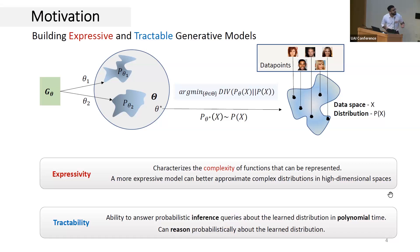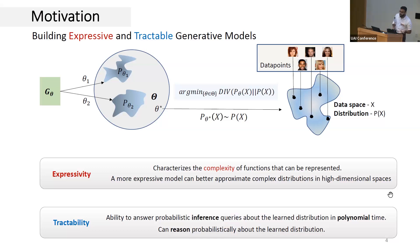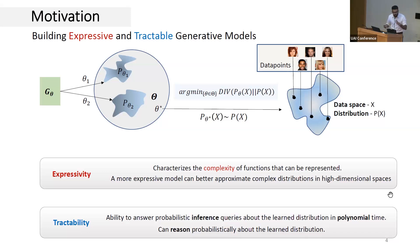Second, we need models to be capable of reasoning probabilistically about the learned data distribution — in other words, they should have the ability to perform exact probabilistic inference tractably. Achieving both of these at the same time is challenging because optimizing for one typically comes at the cost of the other. As a result, we have very expressive but intractable deep generative models on one hand, and more practical but less expressive probabilistic models on the other.